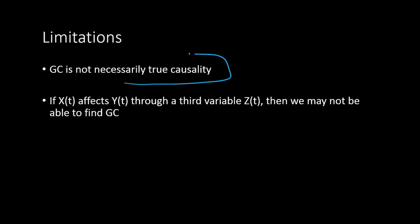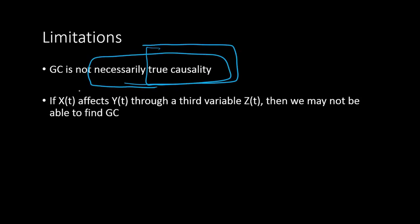There are some limitations of Granger causality. First, Granger causality is not necessarily true causality — do not confuse the two. Second, if Xt affects Yt through a third variable Zt, we may not be able to find the Granger causality between Xt and Yt. Even if Xt genuinely Granger causes Yt through Zt, the standard Granger causality test will not be able to detect it. That's another weakness of the test.